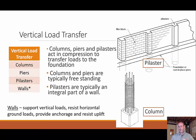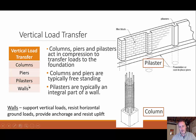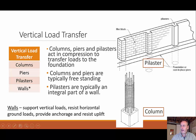When bringing loads down, we transmit them vertically to the soil using columns, piers, pilasters, and walls — all structural members that bring the load straight down. A pilaster is almost like a column built into a wall; you'll see these bump-outs both on interior and exterior walls where a beam rests on the pilaster for extra support. Walls also support vertical loads and horizontal ground loads, and provide anchorage and resist uplift.